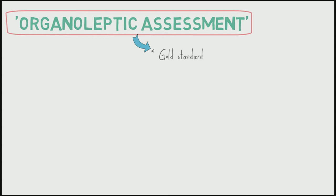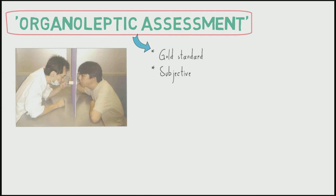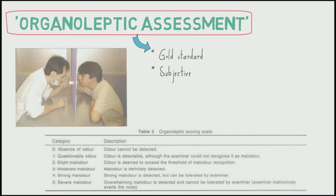A more professional direct method is organoleptic assessment — the gold standard sensory test, though subjective as it is based on the examiner's perception. As seen in the photo, a privacy screen is placed between examiner and subject with an open-ended plastic tube of 10 centimeters length. The subject exhales slowly from one end and the examiner judges the odor from the other. Nasal breath can also be assessed. The examiner scores breath on a scale of 0 to 5 — none to severe malodor.